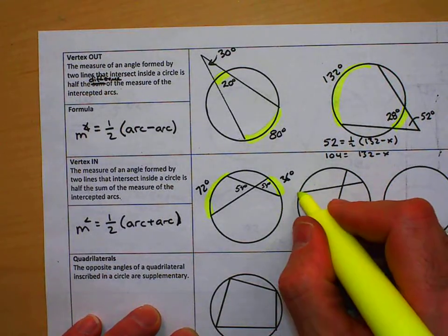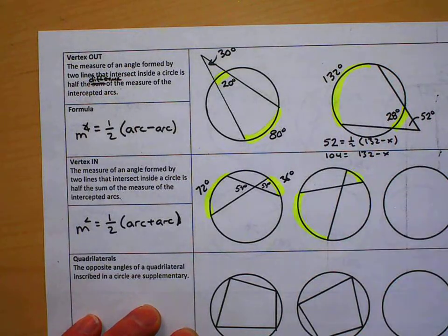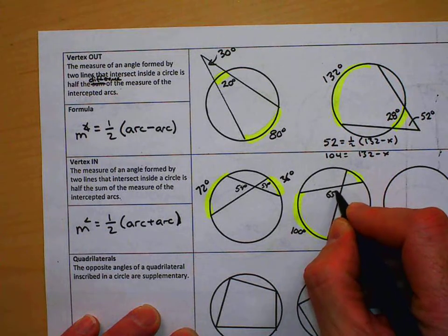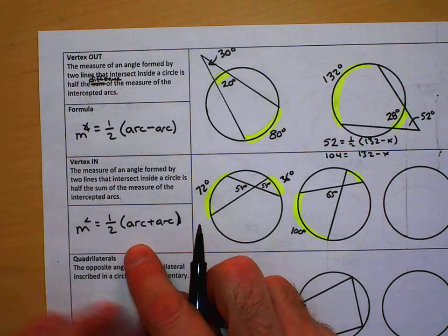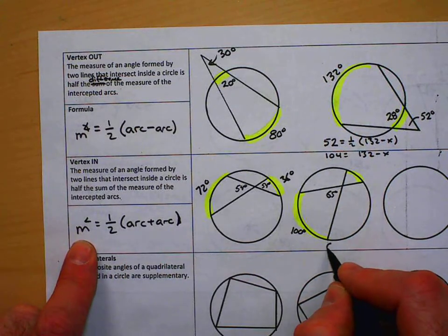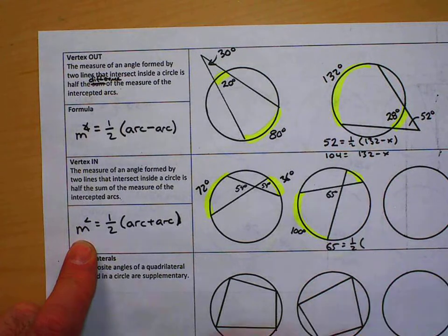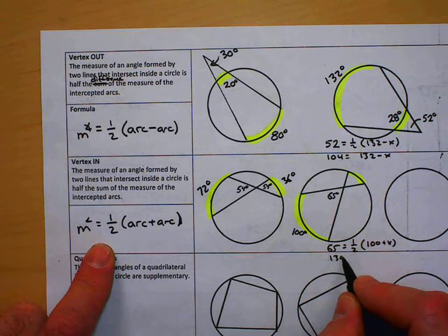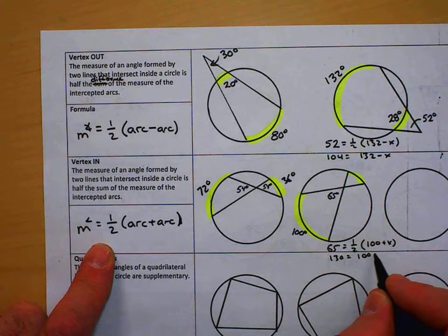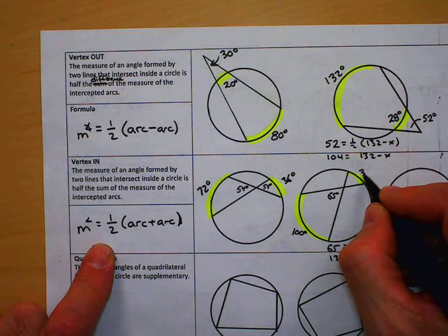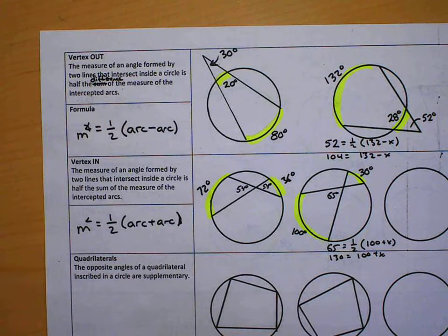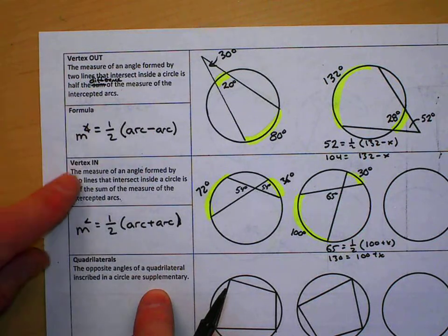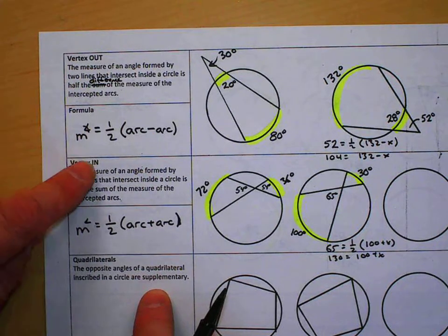If they gave us, just like earlier, if they gave us this being 100 and this being 65 degrees, what is this? Well, we do the same thing we did before. The angle measure is 65 degrees. We plug in one half, and that's going to be 100 plus x. Double it, you get 130 equals 100 plus x. Subtract 100 from both sides, and now we know this is 30 degrees. So we have all that going on. If it's outside we subtract. If it's inside—if the vertex, we're talking about the vertex here—the vertex is inside we add.